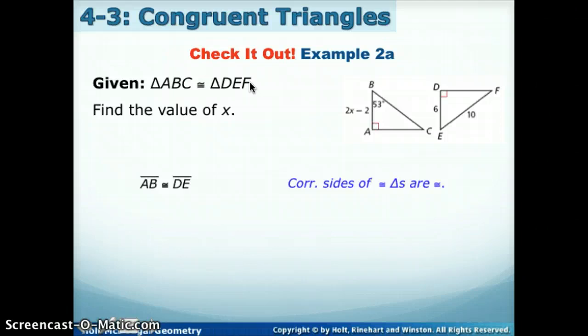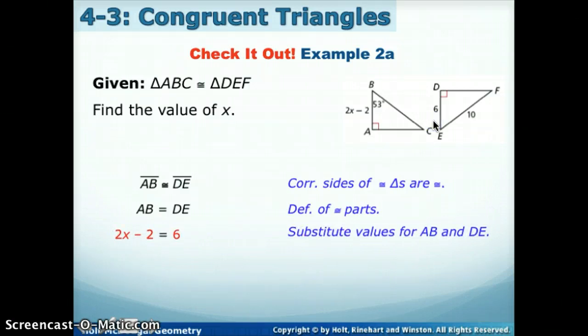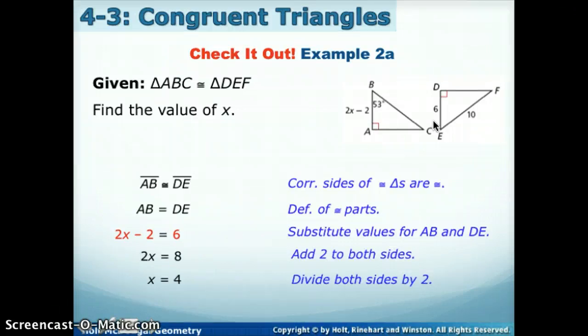Well, what does it mean to be congruent? That means that they're equal, which I have to do before I can plug anything in. I say that the measures are equal, and then I see that measure AB is 2X minus 2, and DE in the picture is 6. So I'm going to set those equal to each other, and we're going to solve by first adding 2 to both sides, and then we are going to divide both sides by 2, and we get that X is 4.